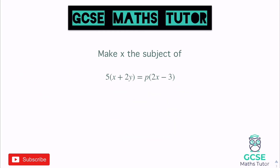The only thing different here is we've got brackets on both sides. So let's completely rewrite this without the brackets — let's expand it. We get 5x plus 10y equals, and putting the p at the end, 2xp minus 3p.